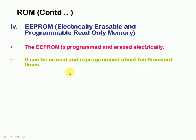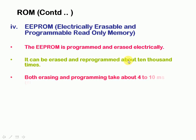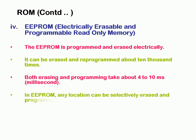EEPROM can be erased and reprogrammed about 10,000 times. Both erasing and programming takes about 4 to 10 milliseconds. In EEPROM, any location can be selectively erased and programmed — just like how we can delete a folder, delete a file, or copy and paste on our computer system. EEPROM provides a facility to select data and delete it whenever we want, or rewrite the data.